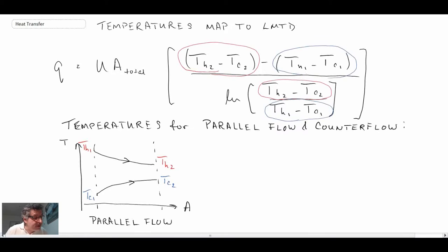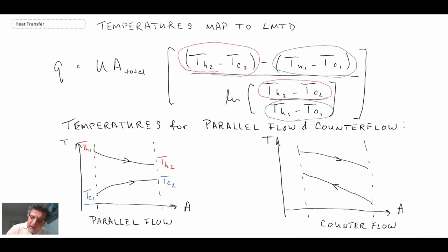Now looking at counter flow, so if we're looking at a counter flow heat exchanger, then we would have TH1 here, TH2 there, and T cold one here and T cold two there. So you can see that what we're doing, we're putting this as being location one and this is location two.